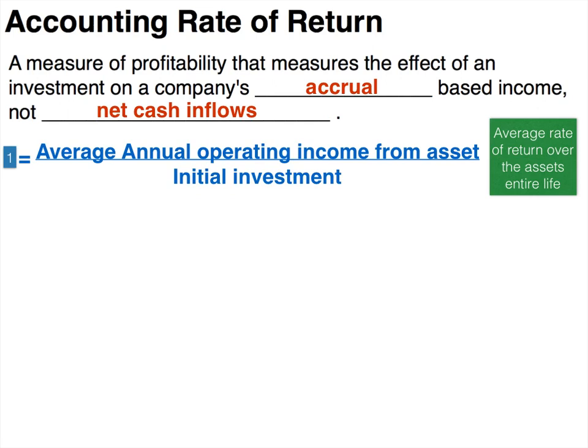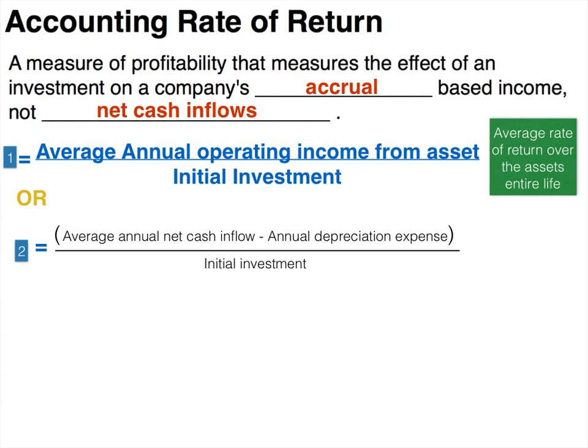The accounting rate of return uses the initial investment as the denominator for all three forms. The second form changes the numerator: take the average annual net cash inflow and subtract the annual depreciation expense. This is just another form of the same equation, and which form you use depends on what information you're given in a problem.